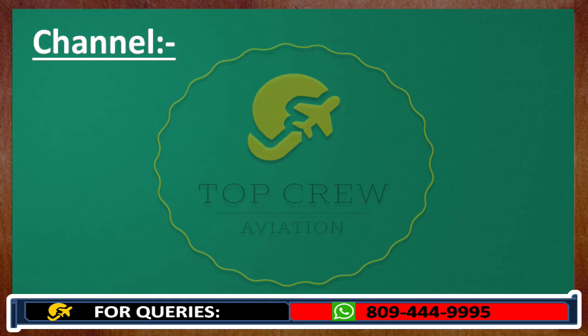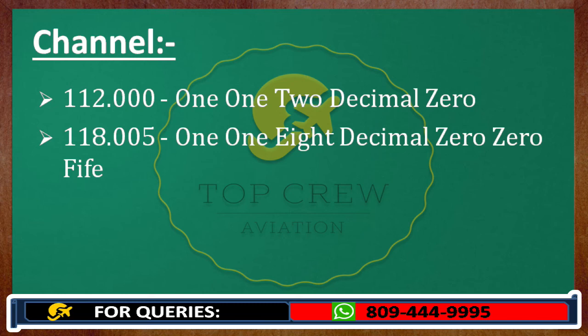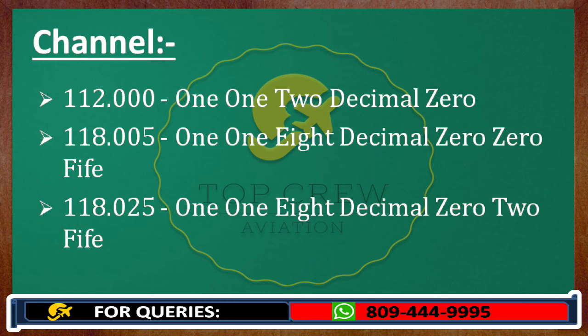Now we would talk about channel frequencies. If it is written 112.000, we would transmit it as 112.0. Same goes for 118.005 — transmitted as 118.005. And 118.025 — transmitted as 118.025. I am using 'point' just to make clear the difference; in aviation language we use 'decimal' in place of 'point'.